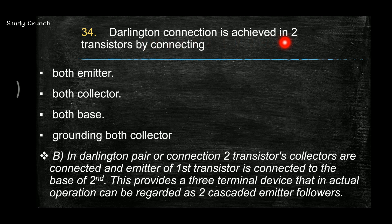Next, Darlington connection is achieved in two transistors by connecting both collectors. In Darlington pair connection, two transistors' collectors are connected and emitter of the first is connected to the base of second. This provides a three terminal device that can be regarded as two cascaded emitter followers.